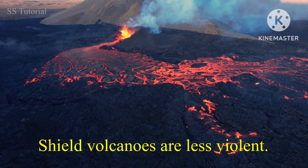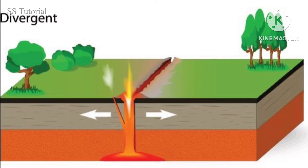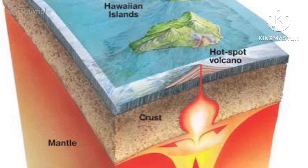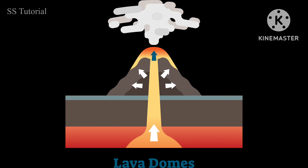Shield volcanoes are comparatively less violent. They are commonly found on the divergent plate boundary and sometimes may also be found above hot spots. Mauna Kea and Mauna Loa of Hawaii island are two famous examples of shield volcanoes.